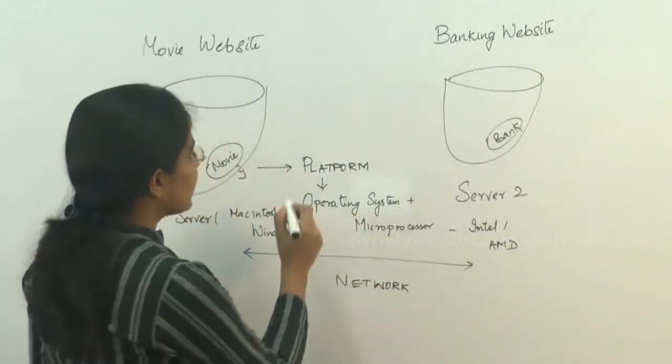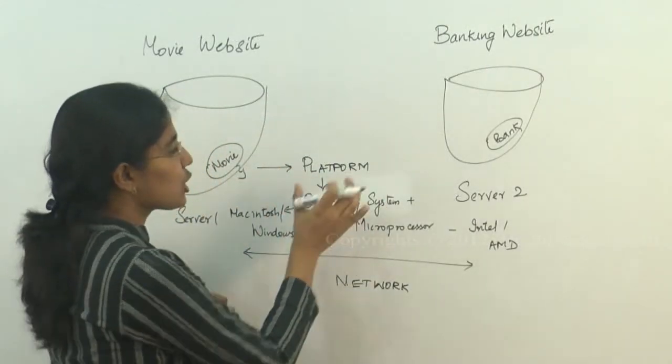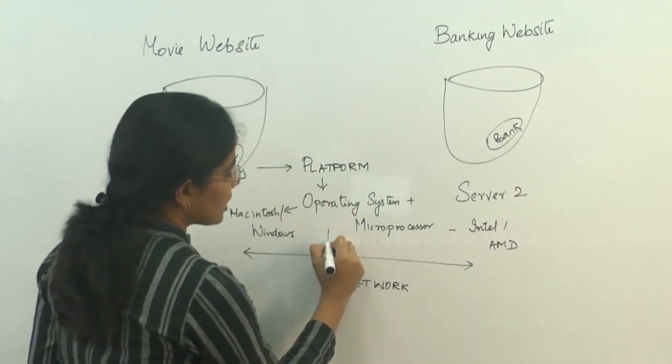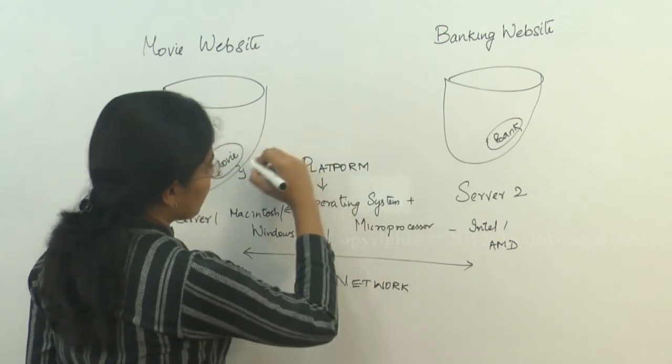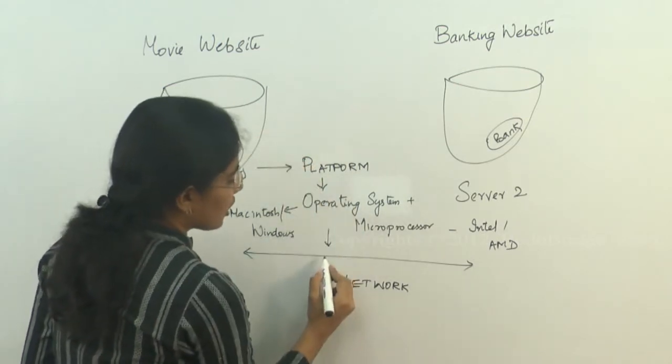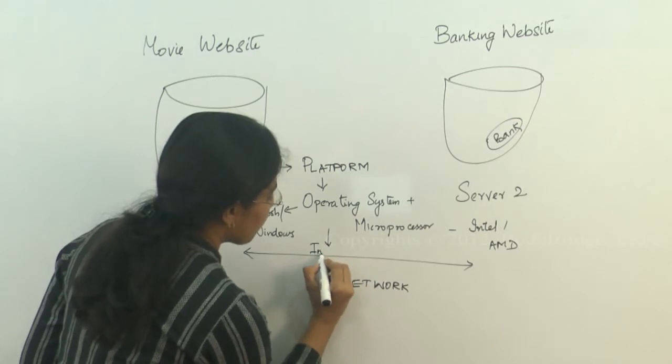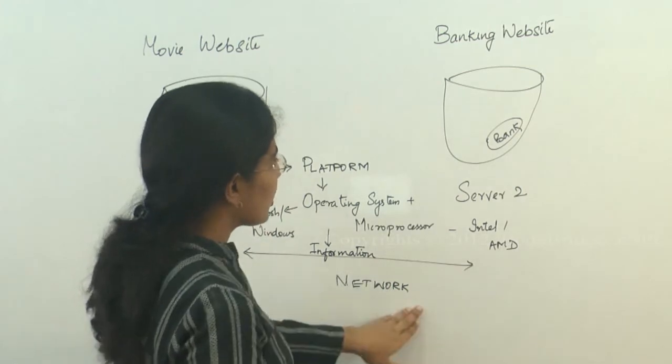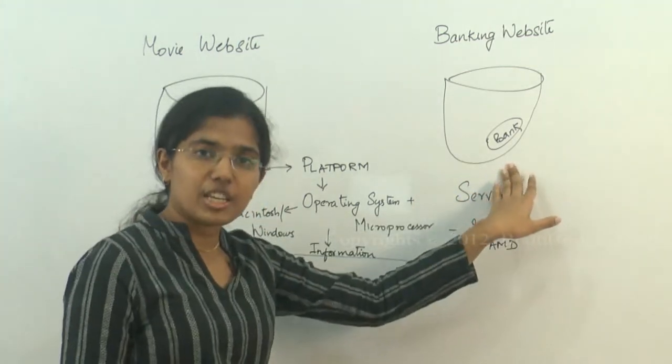So the platform is the sandwiching environment between the application and the network. This basically converts the programming instructions into information that has to move across the network so that it is available to the banking information.